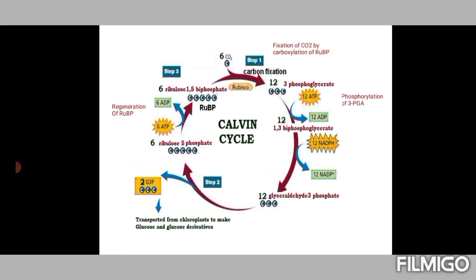In carbon fixation, six molecules of ribulose 1,5-bisphosphate (a 5-carbon compound, totaling 6×5 = 30 carbons) combine with six molecules of carbon dioxide (6 carbons), giving a total of 36 carbon molecules. These give rise to twelve molecules of 3-phosphoglycerate, which also accounts for 12×3 = 36 carbons. This is carbon fixation — the fixation of CO₂ by carboxylation of RuBP.